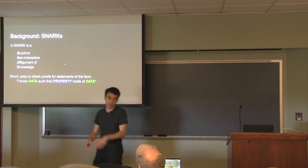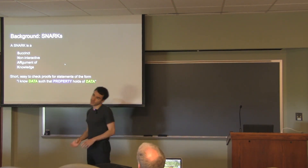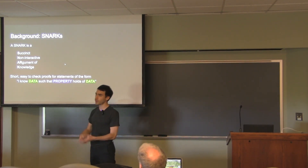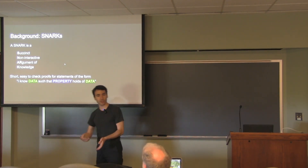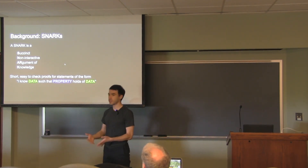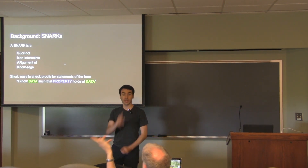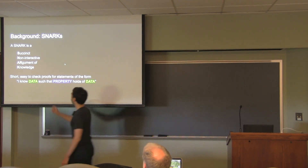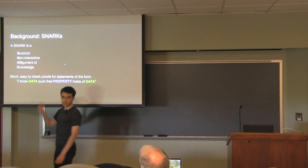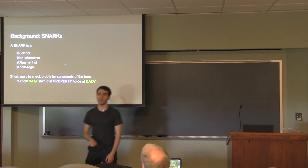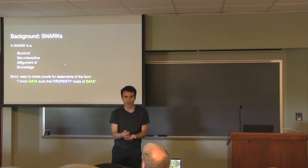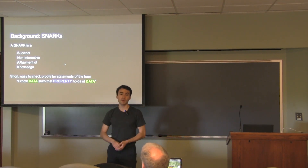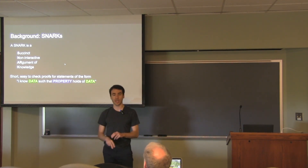A SNARK doesn't have to be zero-knowledge, but it's basically free to make it so. It's succinct, so you can't really leak many bits of information because it's so short — though you may leak some bits. Concretely, these things are really pretty tiny — less than a kilobyte, like a few hundred bytes, regardless of how big the data is. And checking them takes like 10 milliseconds, regardless of how complicated the property is.